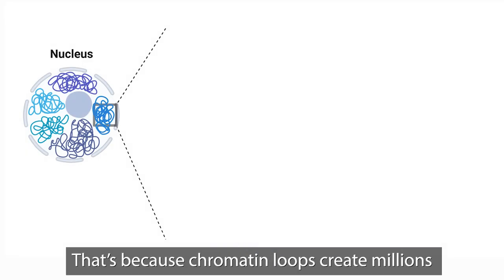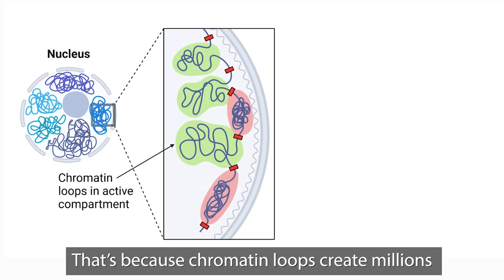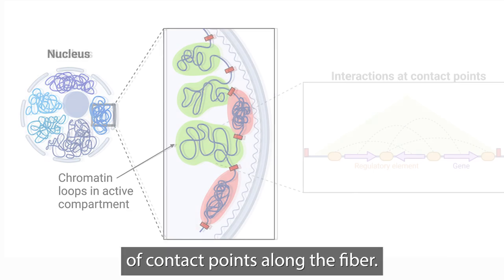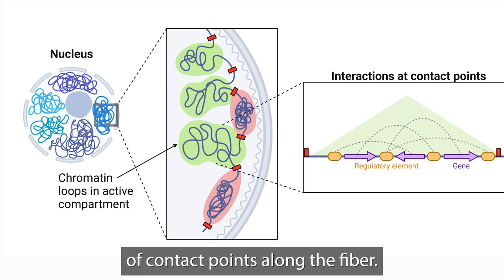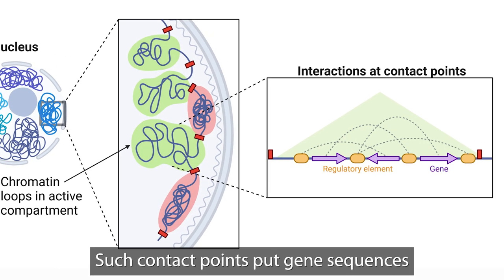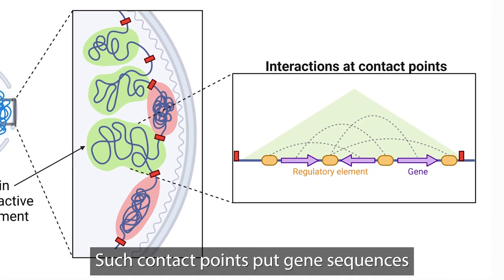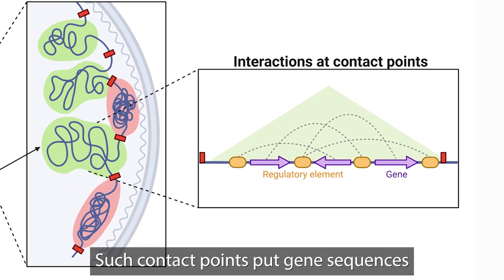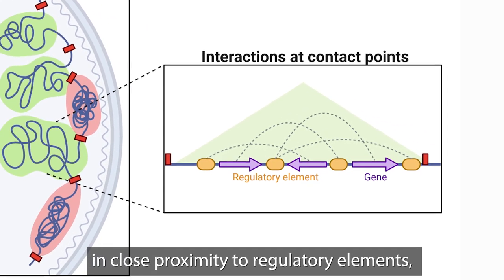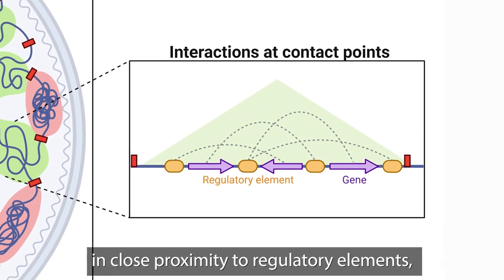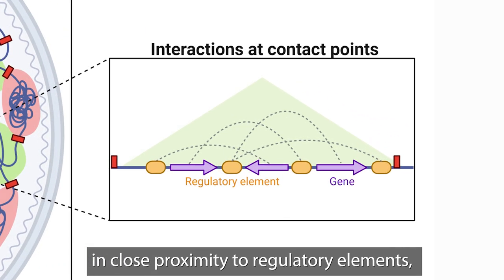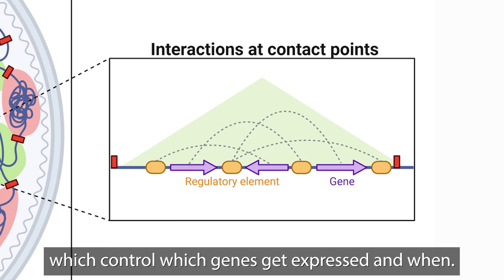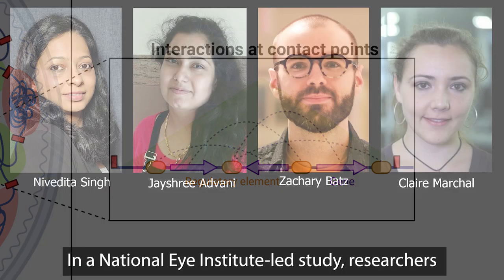That's because chromatin loops create millions of contact points along the fiber. Such contact points put gene sequences in close proximity to regulatory elements, which control which genes get expressed and when.